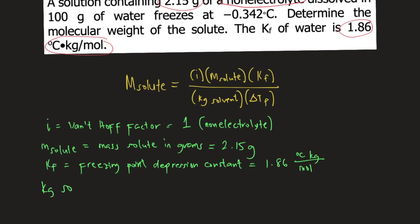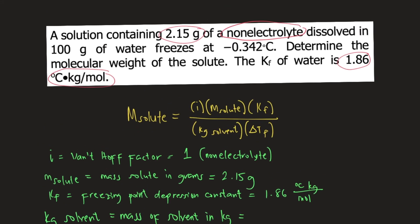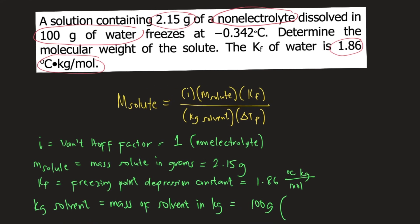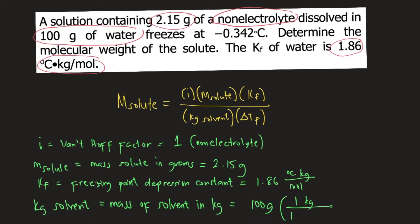Kilogram solvent is the mass of solvent in kilograms. In our problem, the mass of solvent is 100 grams of water, so water is the solvent. The unit is still in grams, so we need to convert that to kilograms: 100 grams times 1 kilogram per 1,000 grams equals 0.100 kilograms of solvent.